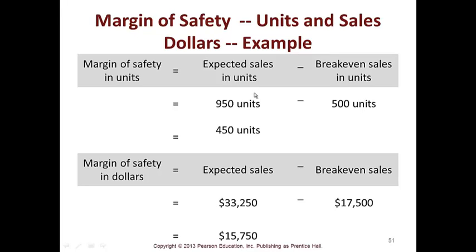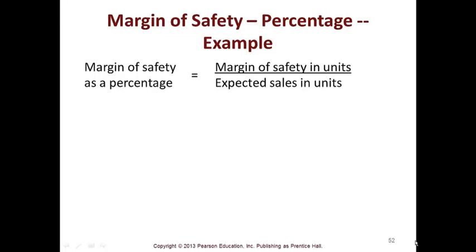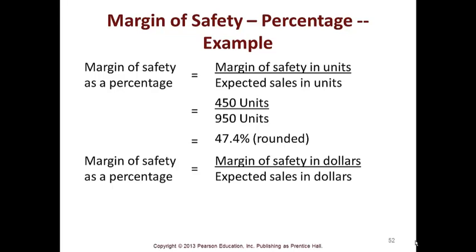Here's an example showing expected sales in units and break-even sales in units. Your margin of safety in dollars is expected sales minus break-even sales — that's your cushion. As a percentage, margin of safety in units divided by expected sales in units gives you a 47.4% cushion. Some problems give you dollars and some give you units, but it's the same calculation either way.